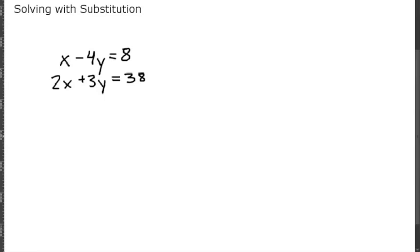Now let's look at x minus 4y equals 8 and 2x plus 3y equals 38. This is trickier because we don't already know what one variable equals. We'll need to solve for a variable first — let's solve for x in the first equation.